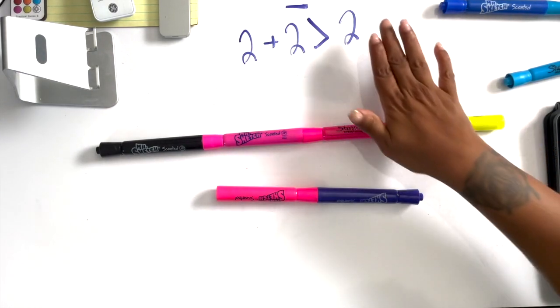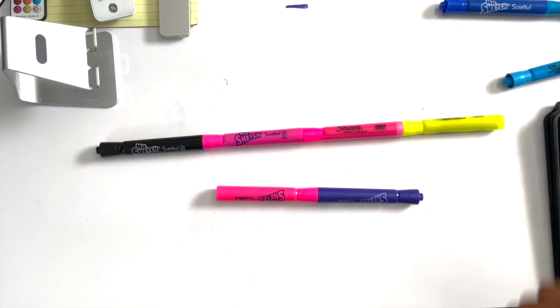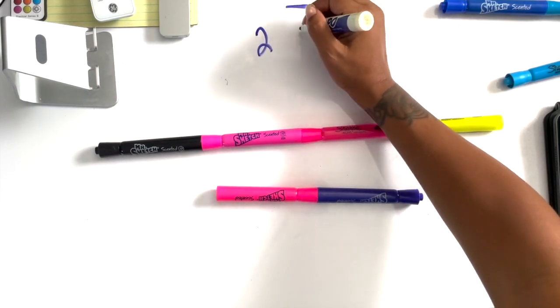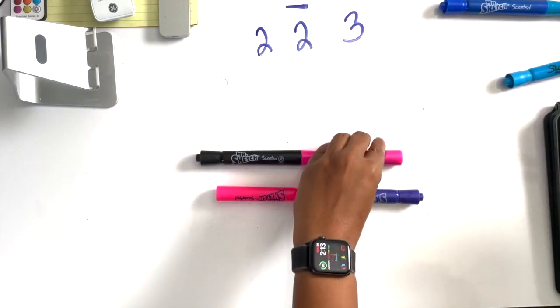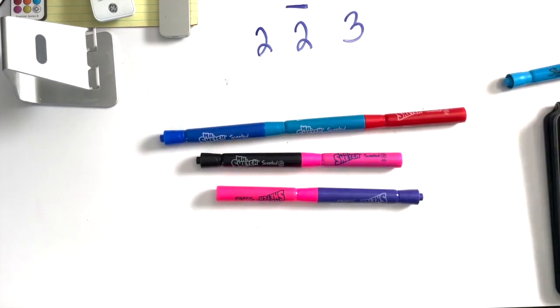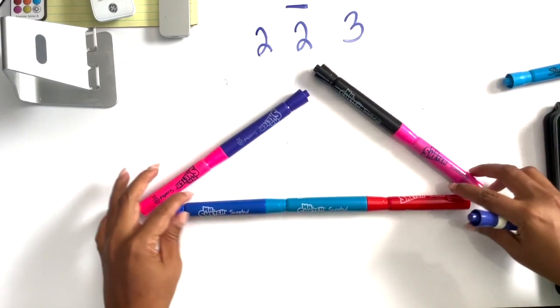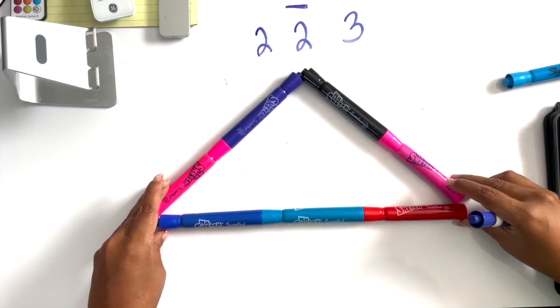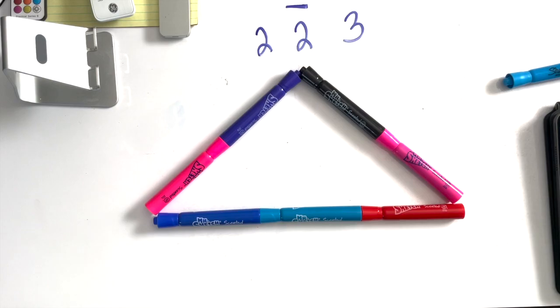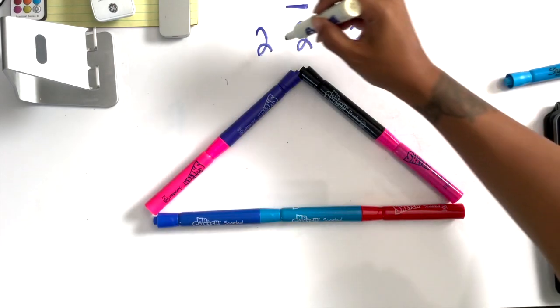And even if I moved it around, if I have the same numbers you're gonna see that. So let's try one that has different numbers. What if I had a two, a two and a three? So we have a two, a two and a three. Will this make a triangle? I'm gonna put my three at the bottom. Yeah, this makes a triangle. So a two, two and a three does make a triangle.